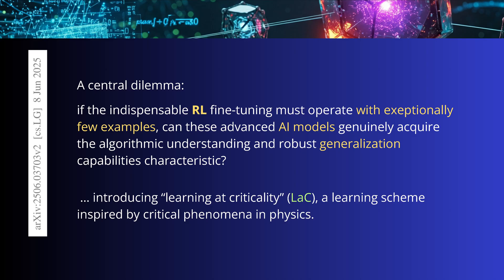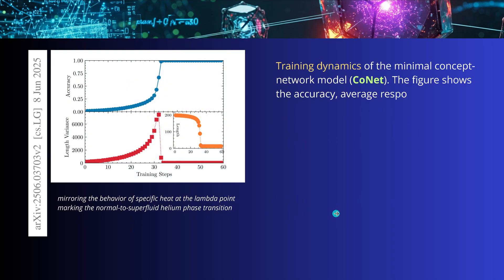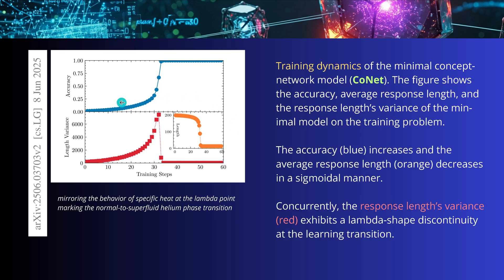This was the main question the researchers looked at for AI applied to quantum field theory, and they introduced learning at criticality. This criticality is of course where we have our phase transition in the learning scheme, and it is not limited to physics. Looking at the training dynamics of a minimal concept network — our CONAT — and examining the accuracy, you see a lambda-shaped behavior. This means we have a kind of phase transition, similar to the transition from normal to superfluid helium phase.